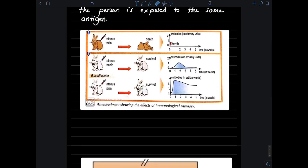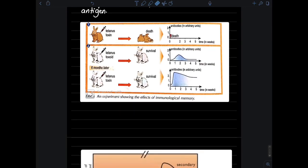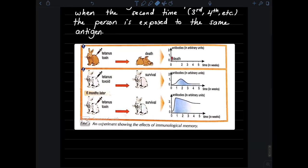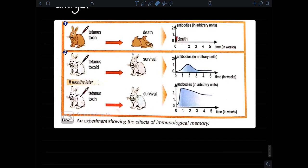In this lesson, we have to study the characteristics of the secondary immune response compared to the primary. In experiment one, we have an injection of tetanus toxin into a rabbit. We notice that there is death of the rabbit and there is no secretion of anti-tetanus antibodies.